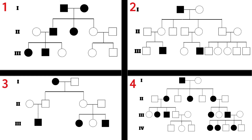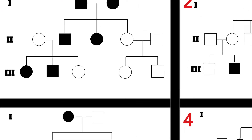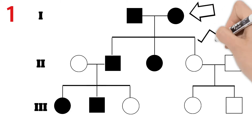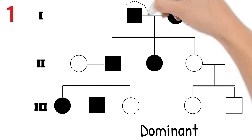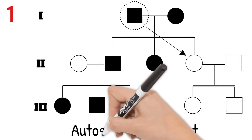Now, with these rules in mind, let's take a look at these four separate pedigree charts and determine the model of inheritance of each — use each of the four methods only once. Pause the video if you want to try on your own first. This first pedigree chart shows parents with the trait, but not all of their children do, so this is dominant. Looking at individual 1-1, he is a male with the trait, but his daughter 2-4 does not have it. Therefore, it must not be sex-linked — this pedigree is autosomal dominant.